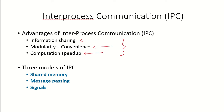There are three main models of IPC: one is shared memory, then message passing, and third is signals, along with a few others.